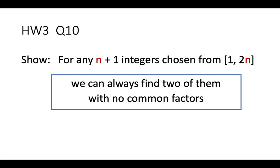For this question, it is not true if we are selecting only n integers. When we are selecting n integers, one possible way is selecting all the even numbers. Then no matter what two numbers are chosen, they will always have a common factor of 2. But if we are selecting n plus 1 integers, then we have enough numbers, and among them there must be two with no common factors.